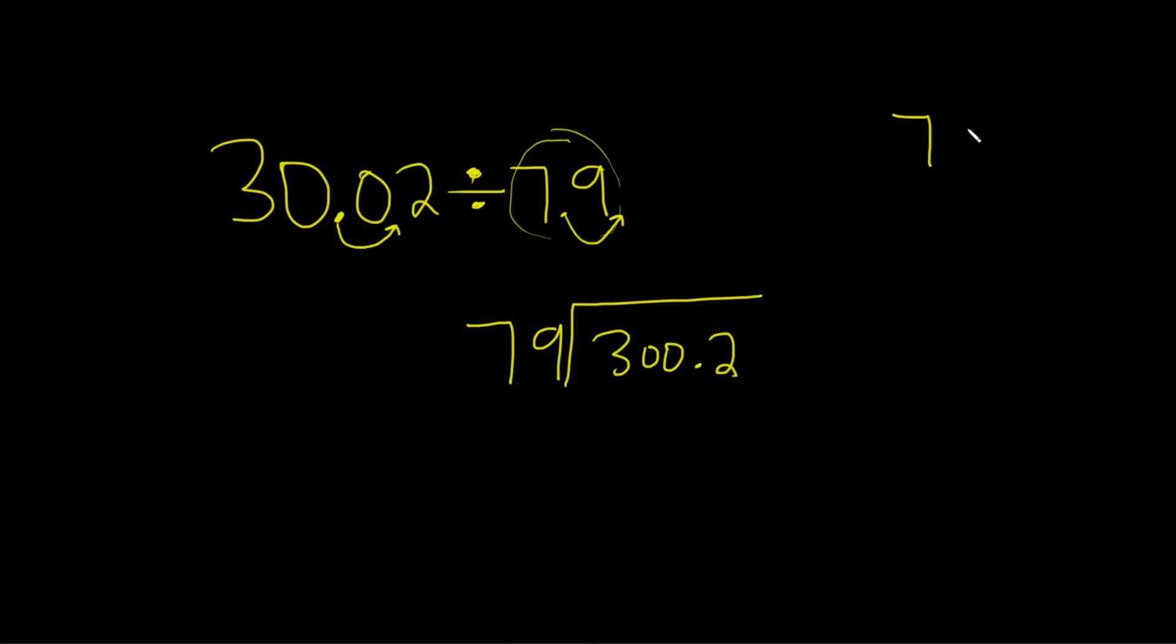Let's go ahead and work out 79 times 3 and see what that is. So 3 times 9 is 27. So we'll write down the 7 and carry the 2. 3 times 7 is 21. 21 plus 2 is 23. So 237. If you do 79 times 4, it's going to be too big. So I'm going to go ahead and put the 3 right here above the 0.